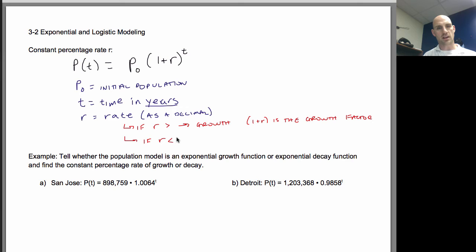If R is less than 0, that means decay. So think about it like this. If I'm doing 1 plus R and R is less than 0, let's say it's negative 0.9. That would mean I'd be raising 0.1 to the T power. Well, when I'm multiplying a decimal together over and over and over, it's going to be smaller and smaller and smaller. And so 1 plus R is the decay factor. So those are the things that I need to know up front.